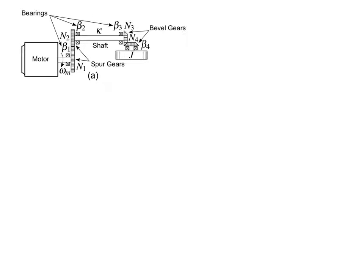In this example we'll be synthesizing the bond graph for a mechanical rotation system. Our first step is to identify the distinct angular velocities. In this system we have 1, 2, 3, 4 distinct angular velocities. So for each of those we're going to establish a 1-junction.